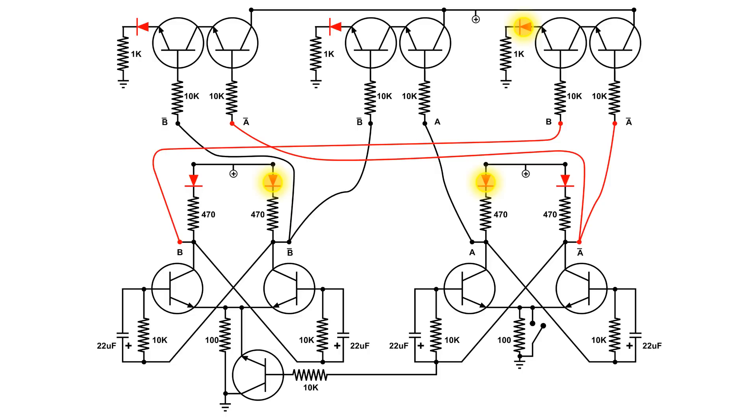Let's toggle the switch again. Now A and NOT B is positive, so our second LED at the AND gate is lit.